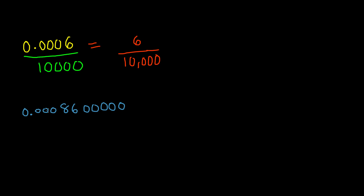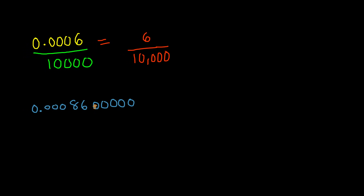These zeros actually affect the place value of that decimal. However, if they're coming after the significant digits — in this case after 86 — those trailing zeros don't really hold a value, unless there's another digit after them. Since there isn't, we can simply cross those trailing zeros out.